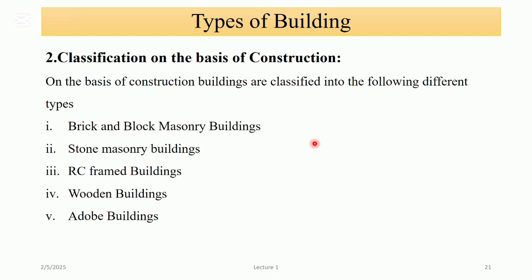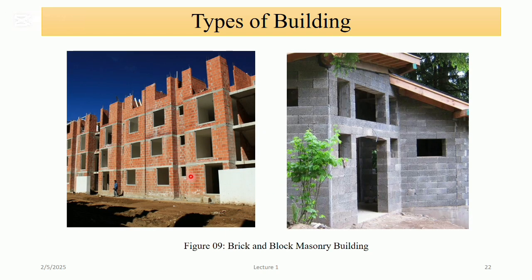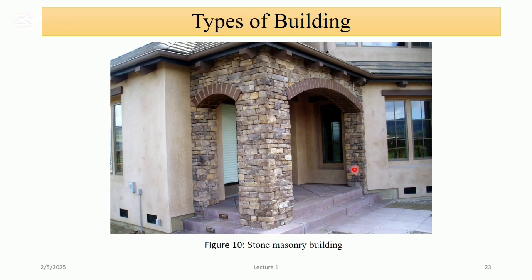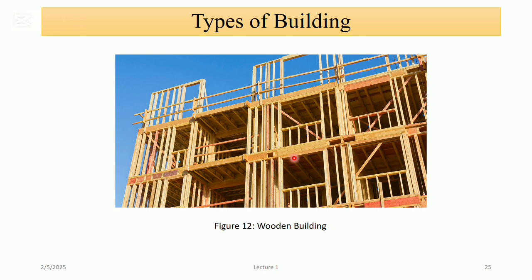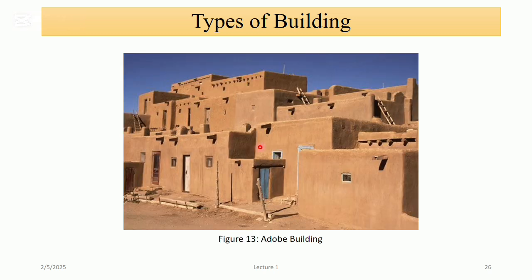The second type of classification is on the basis of construction. On the basis of construction, buildings are classified into the following types: first, brick and block masonry buildings; second, stone masonry buildings; third, RC frame buildings; fourth, wooden buildings; fifth, adobe buildings. Buildings made from brick are known as brick masonry buildings, those made from block are block masonry buildings, those made from stone are stone masonry buildings, those made from reinforced concrete and frame are RC frame buildings, and those made from adobe are adobe buildings.